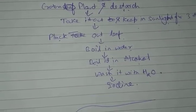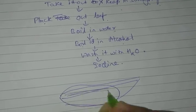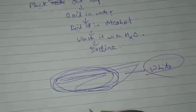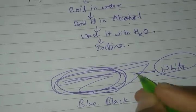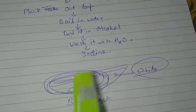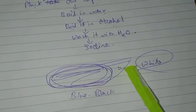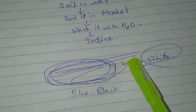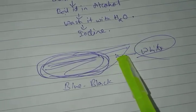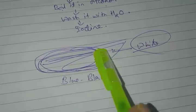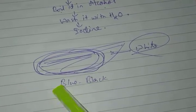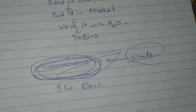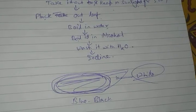You will see that where the leaf was green, that part produces a blue-black color, whereas the white part does not. We know that blue-black color is only produced when starch is present — so this area contains starch and this area does not. After photosynthesis, starch is produced, meaning the green area performed photosynthesis but the white area did not, because chlorophyll is not present in the white part.